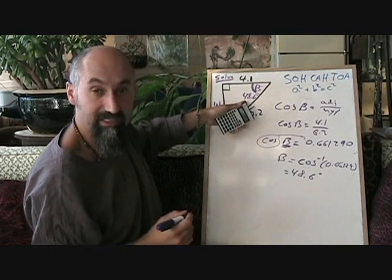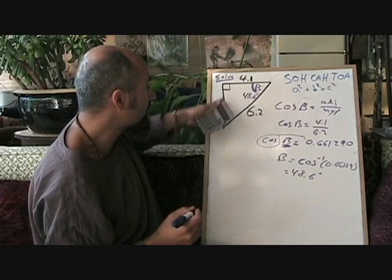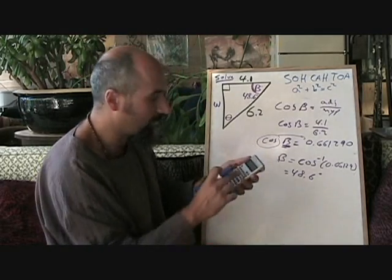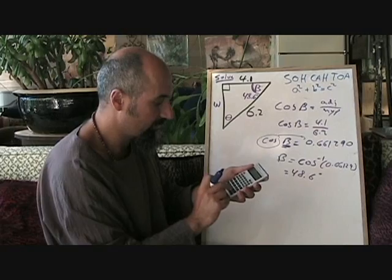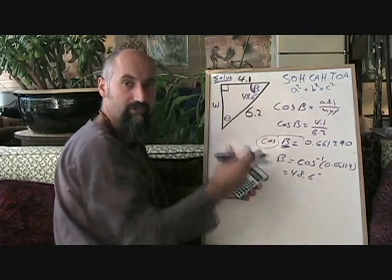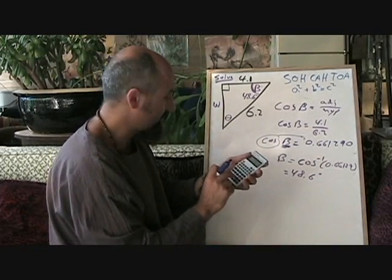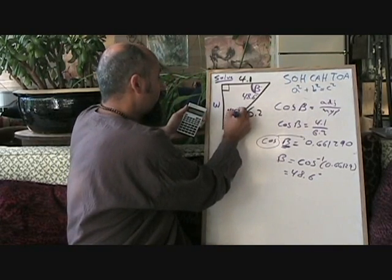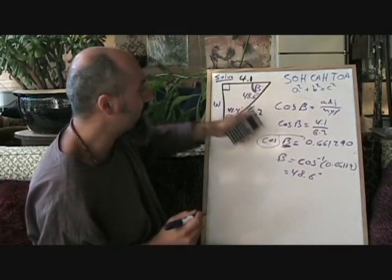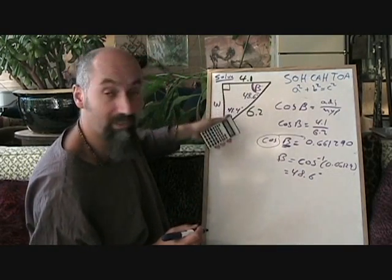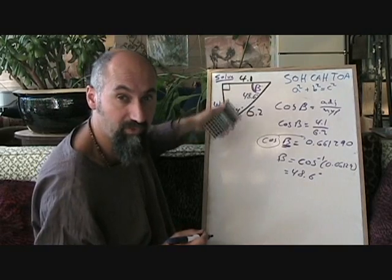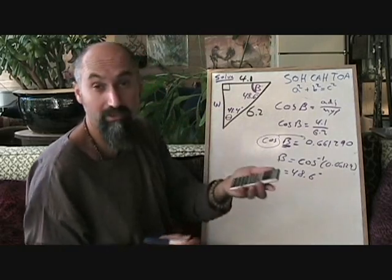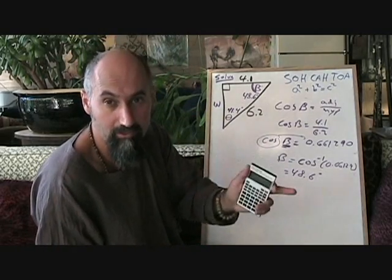Now, since we have this angle, and we have this angle, we know the sum of all of the angles in a triangle is 180 degrees. So all you do, you say 180 minus 90, so you took this away, which gives you 90, minus 48.6 is equal to 41.4 degrees. So right away, by doing one operation, and knowing the relationship in a triangle, which the sum of the angles is 180, you can get the second answer. So if this question was worth three marks, you already got two marks out of it.